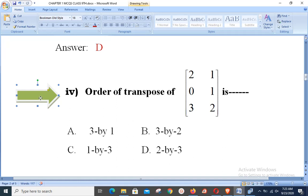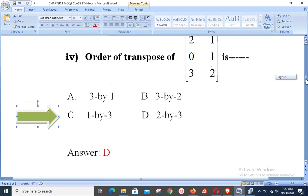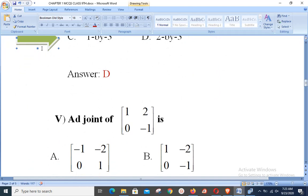In case of transpose, rows and columns will be interchanged. That will become 2 by 3. That is, option D will be my answer in this case. As you can see, option D is the answer. So we go ahead for next objective number 5.